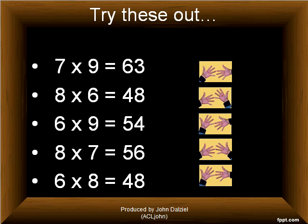7 times 9 is 63. Looking at the fingers, remember it's 60 and 3 times 1 is 3, so 63. 8 times 6 is 40 plus 2 times 4 is 8, so 48. 6 times 9 is 50 and 4 times 1 is 4, so 54. 8 times 7 is 50 and 3 times 2, which is 6, so 56. And 6 times 8 is 40 and 4 times 2 is 8, so 48.